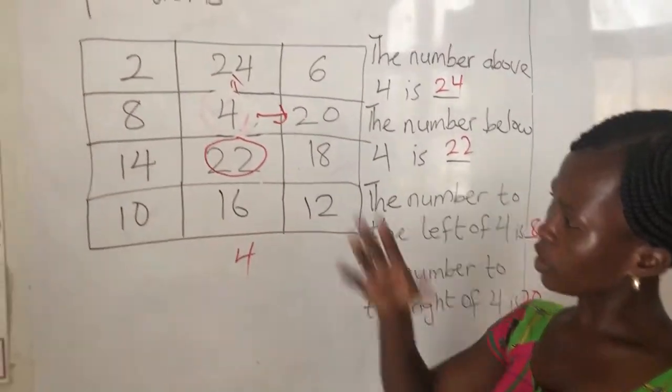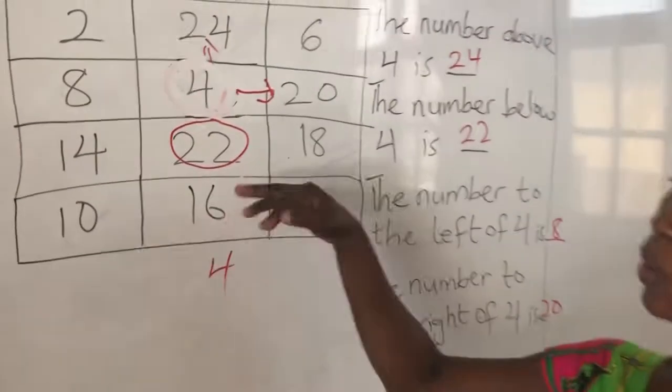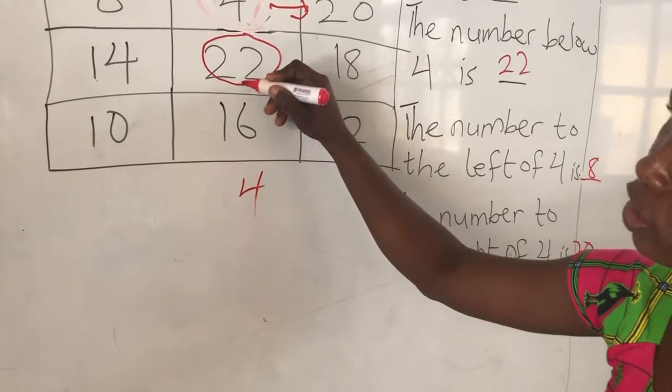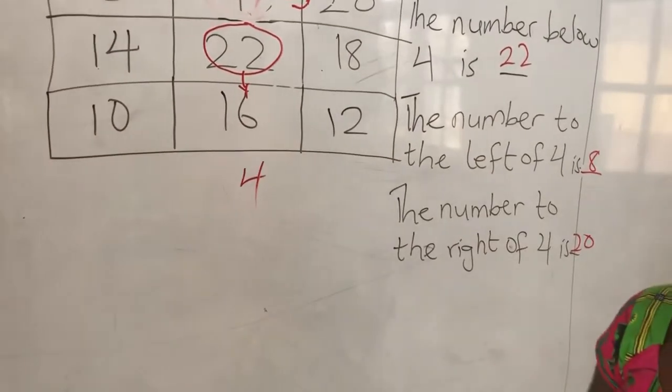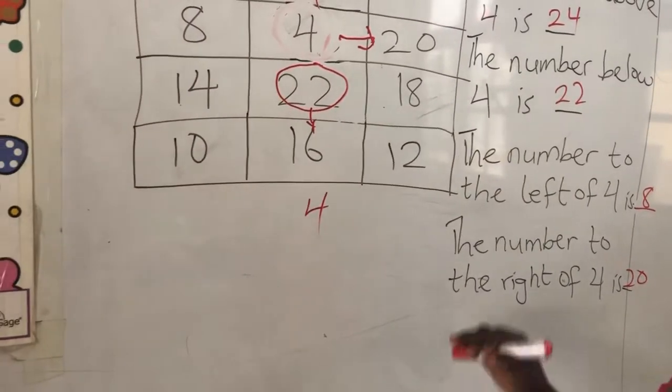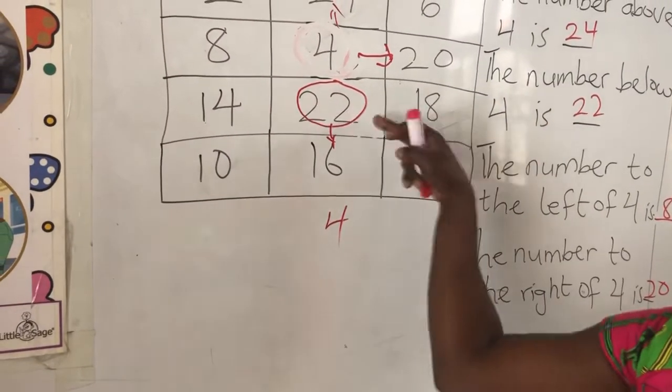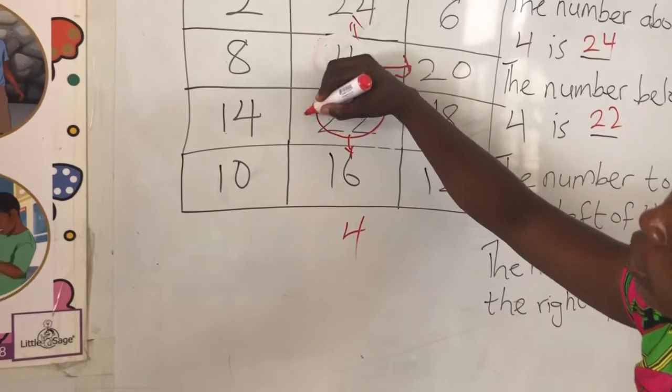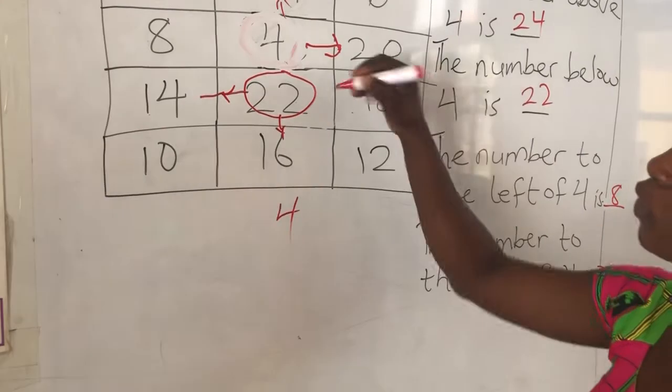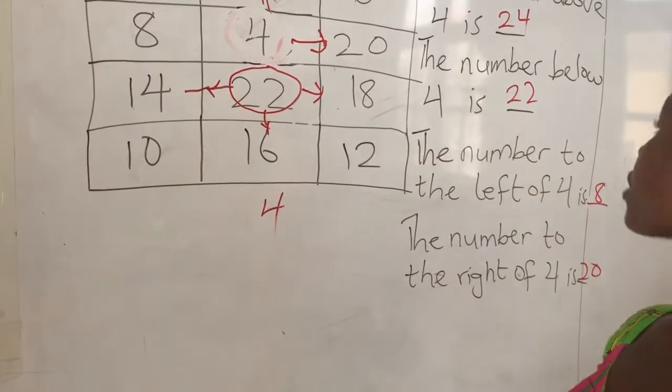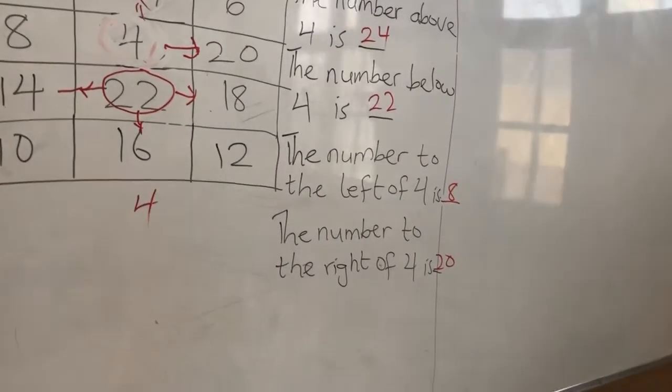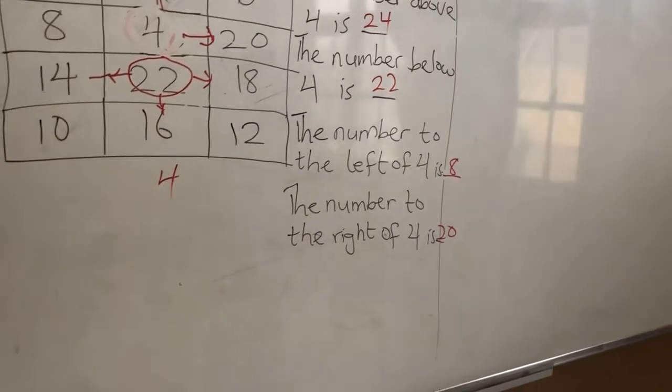This is your arrow. 16. The number to the left of 22, we say is 14. And the number to the right of 22 we say is 18. Alright. We have a few examples in our textbooks. Let's see.